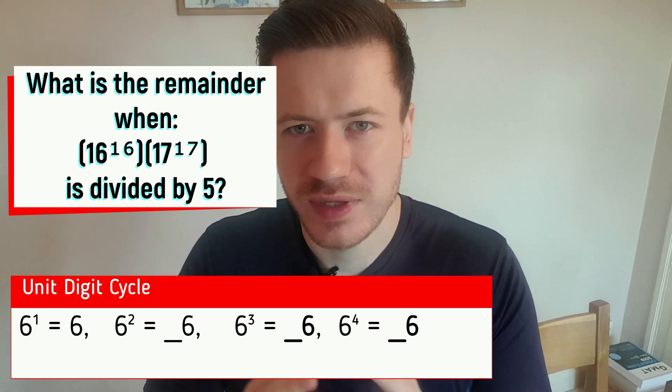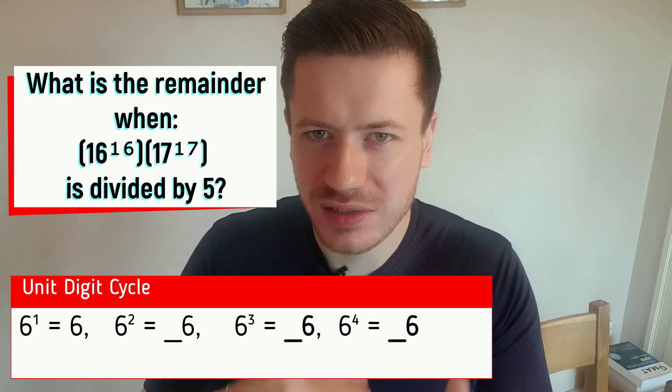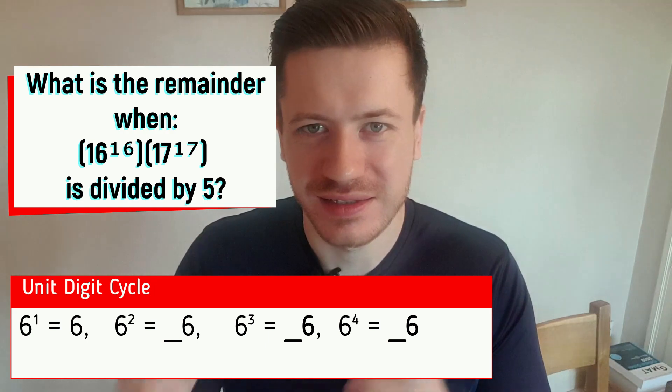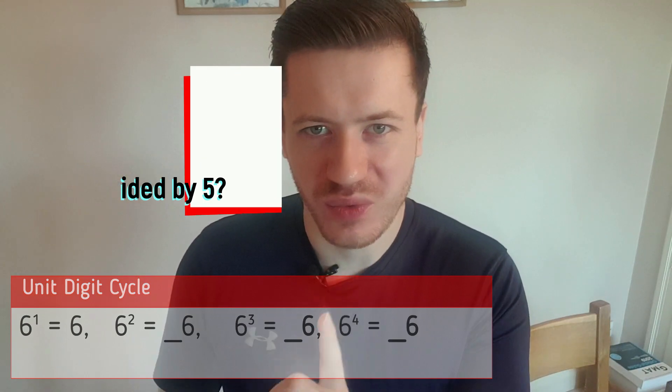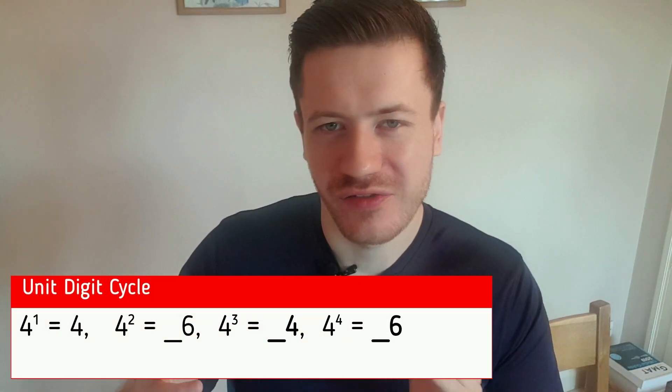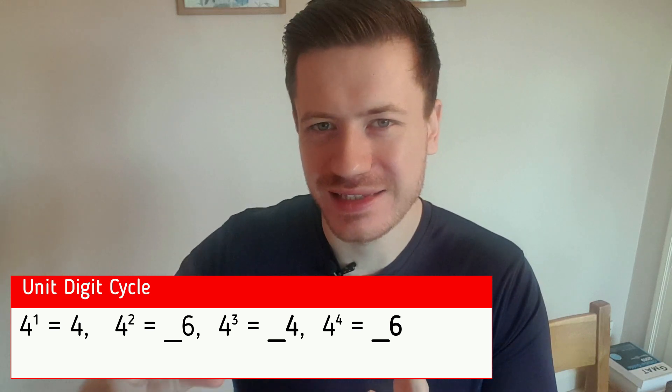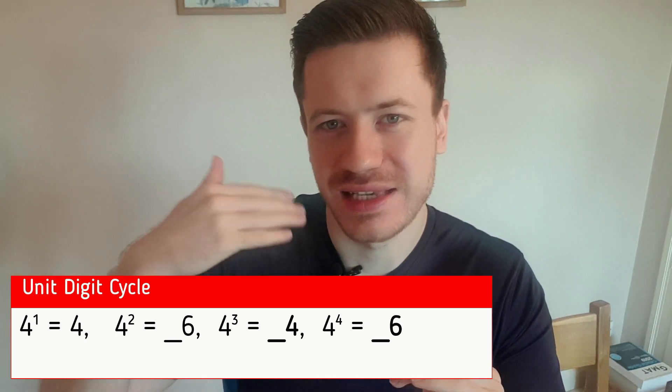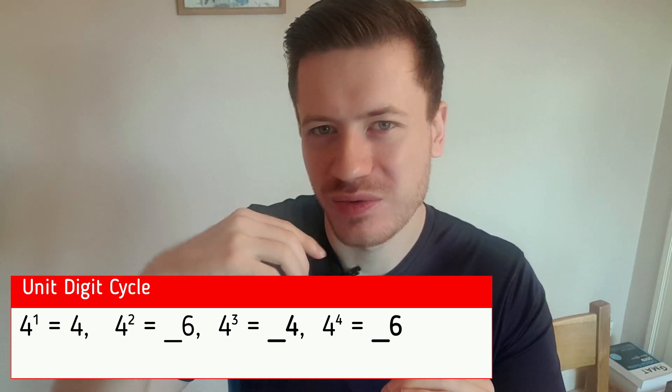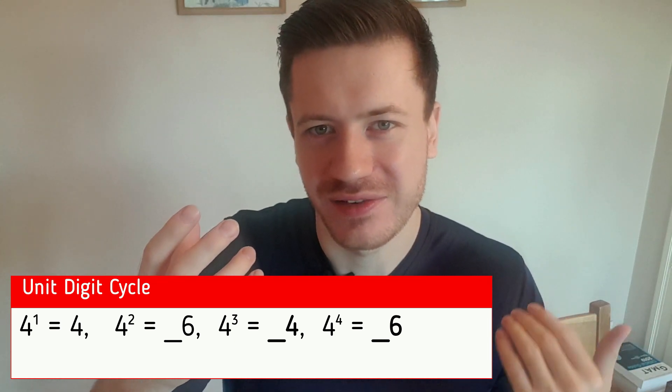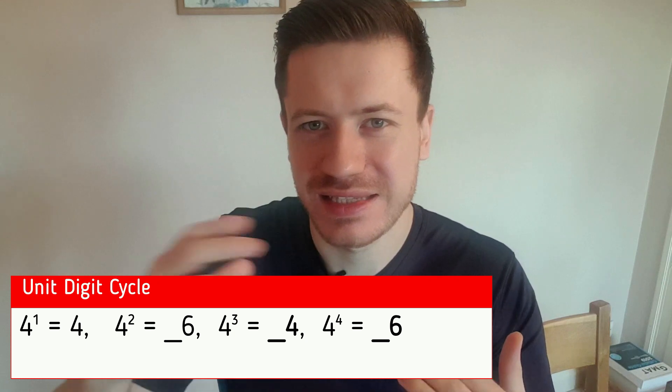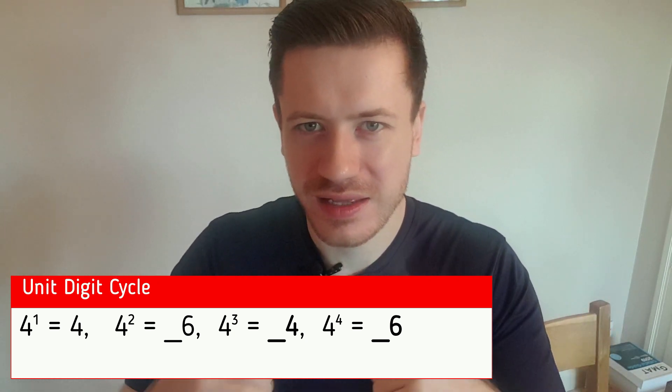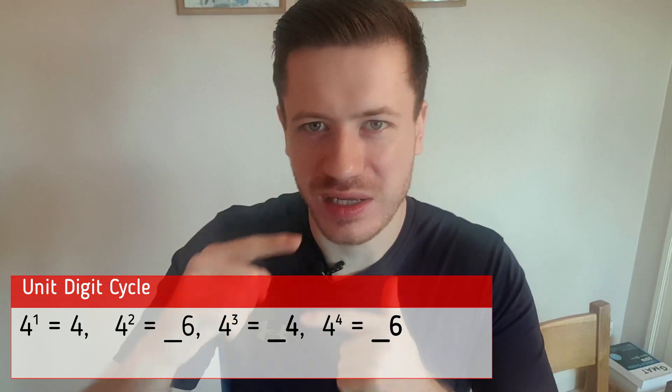What about cycles of two? Can you spot the numbers that have a cycle of two? That would be the numbers four and nine. Four to the power of one is four. Four to the power of two ends in a six. Four to the power of three ends in, or six times four, we're back to four again. And four to the power of four is going to end in a six. So it's four, six, four, six. With nine, the pattern is 919191.